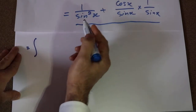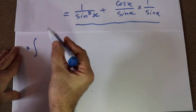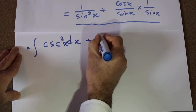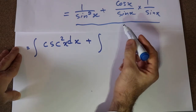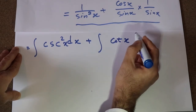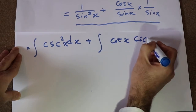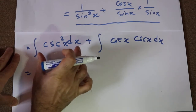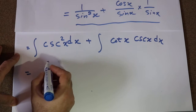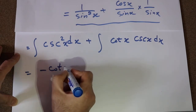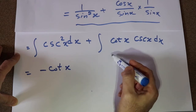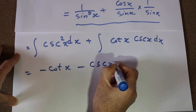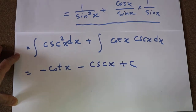That will be equal to the integral of 1 divided by sine squared x dx plus the integral of cotangent x times cosecant x dx. From the table of integrals, we know that the integral of 1 over sine squared x dx equals minus cotangent x, and the integral of cotangent x times cosecant x equals minus cosecant x plus C, where C is the constant of integration. This is the solution to our integral.